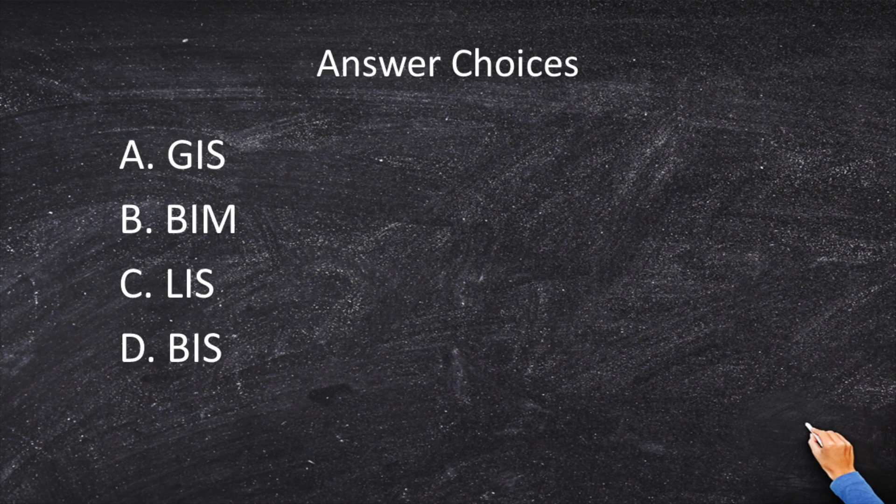Alright, enough of that. Let's go to our answer choices. So there are some civil drawings in a computer system, and we need to figure out what this computer system is called. Is it GIS? Is it BIM? Is it LIS? Or is it BIS? You should know all four of these definitions cold before you go into the FS exam.